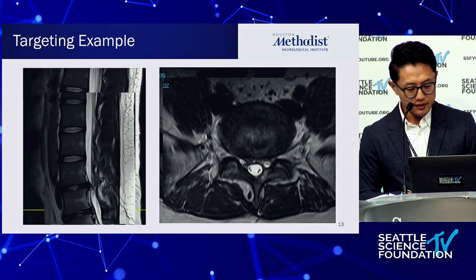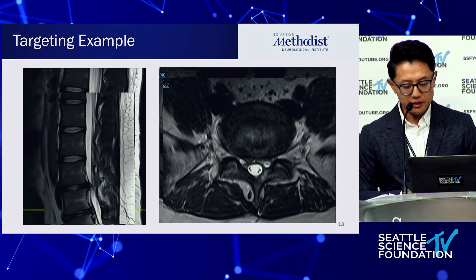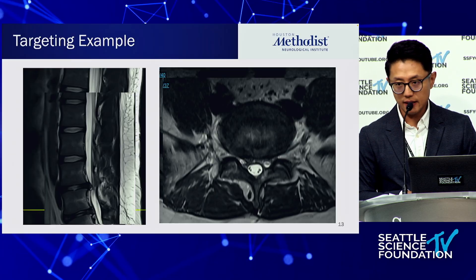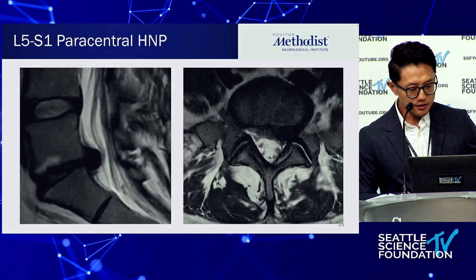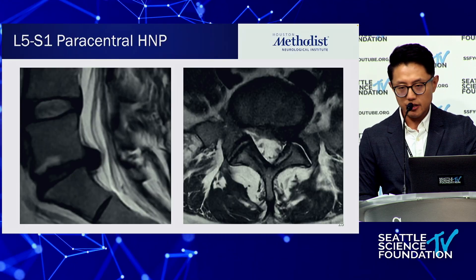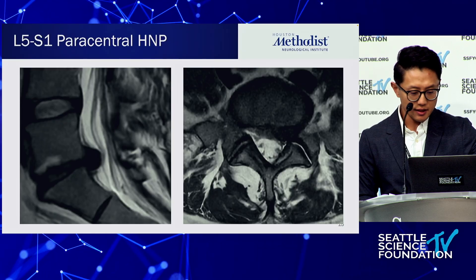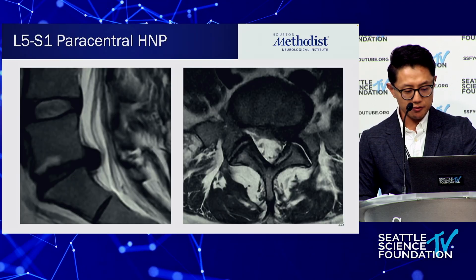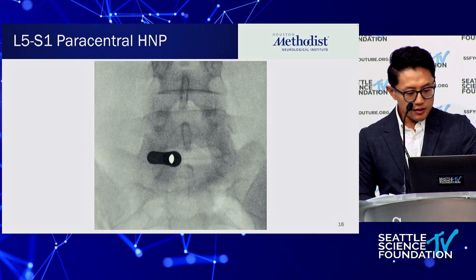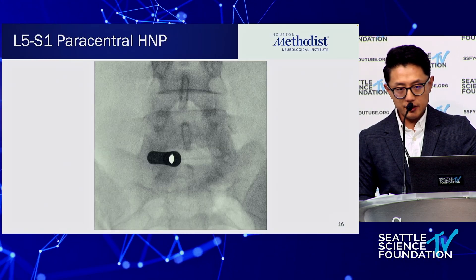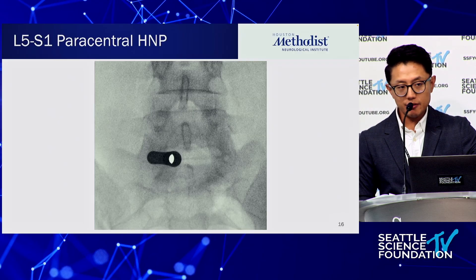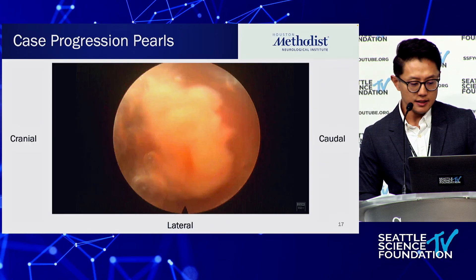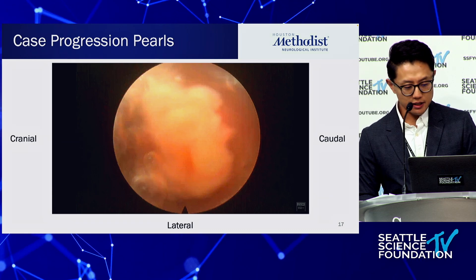Starting medial, you can access the disc herniation and undercut and decompress without really taking any of the facet joint. Here's a case example: L5-S1 paracentral disc herniation with left S1 radiculopathy — this disc is a little more lateral, extending into the proximal foramen. Again, I'm starting medial and looking lateral to leverage the 15-degree scope angle to undercut laterally and minimize bone resection.